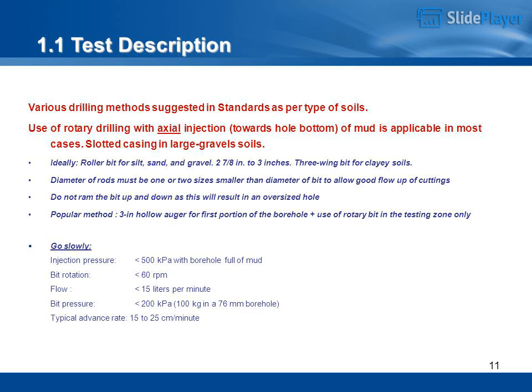Ideally: roller bit for silt, sand, and gravel — 2 and 7/8 to 3 inches. Three-wing bit for clayey soils. The diameter of rods must be one or two sizes smaller than the diameter of the bit to allow flow up of cuttings. Do not ram the bit up and down as this will result in an oversized hole. Popular method: 3-inch hollow auger for the first portion of the borehole, plus use of rotary bit in the testing zone only. Go slowly. Injection pressure less than 500 kPa with borehole full of mud. Bit rotation less than 60 RPM. Flow less than 15 liters/minute. Bit pressure less than 200 kPa (100 kg in a 76 mm borehole). Typical advance rate: 15 to 25 cm/minute.